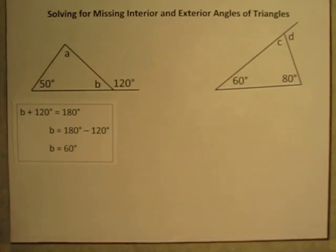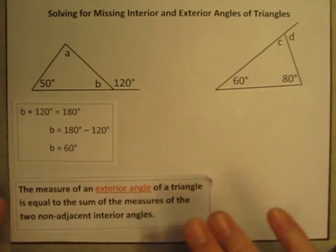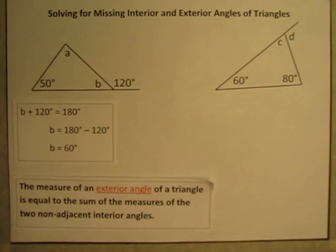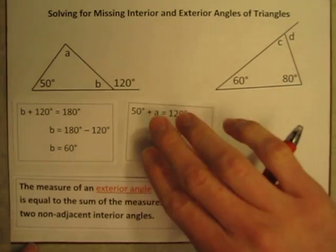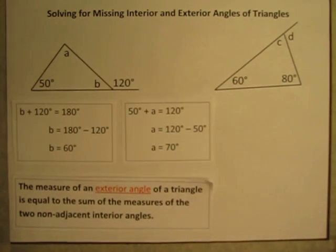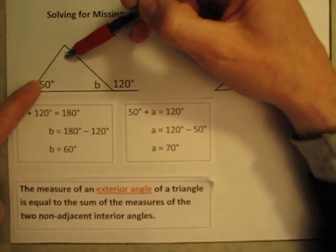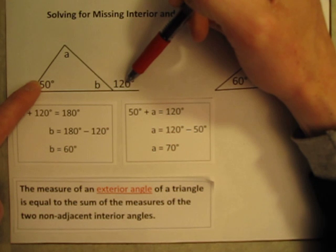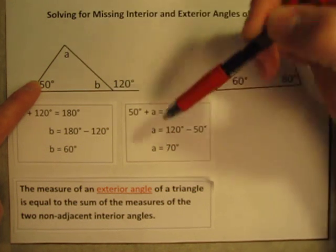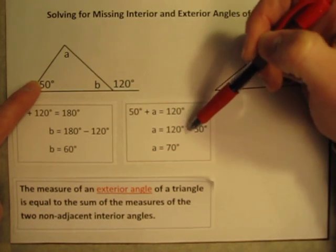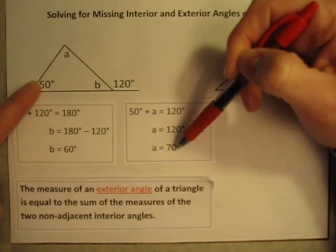That the exterior angle is supplementary to its adjacent interior angle. From there, we can use this fact here. That the measure of the exterior angle is equal to the other two non-adjacent interior angles. So here, I know angle 50 plus angle A is equal to 120. So what's angle A have to be? A must be 120 minus 50, or A must be 70 degrees.